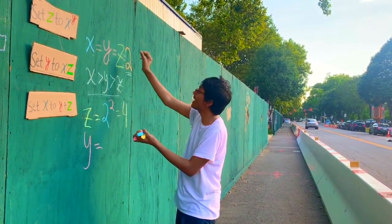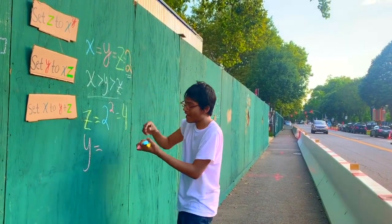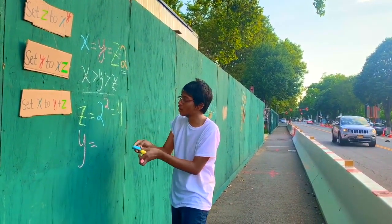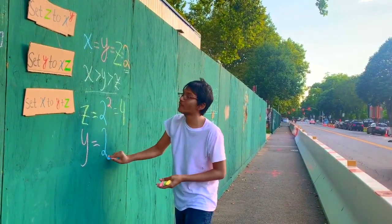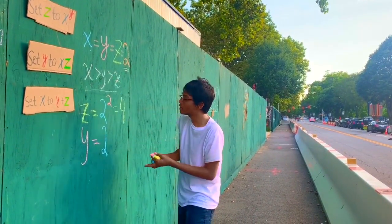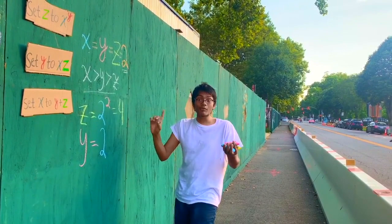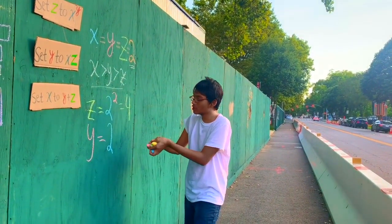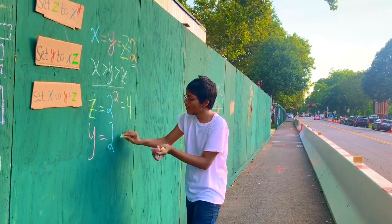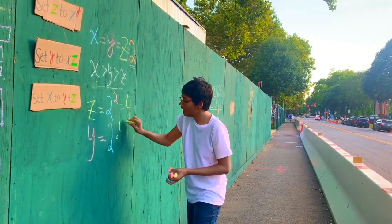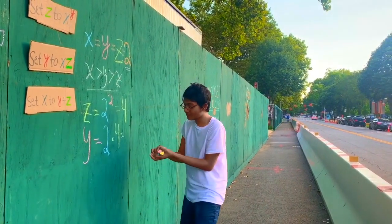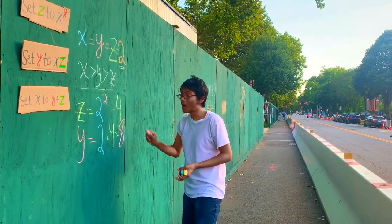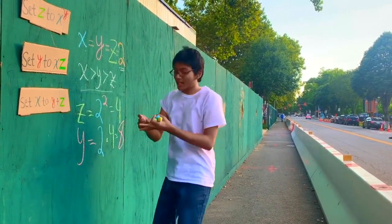Let's compute y. y is going to be x times z. x starts off as 2. But remember, z is now 4. So we're going to do 2 times 4, which gives us a value of 8 for y.